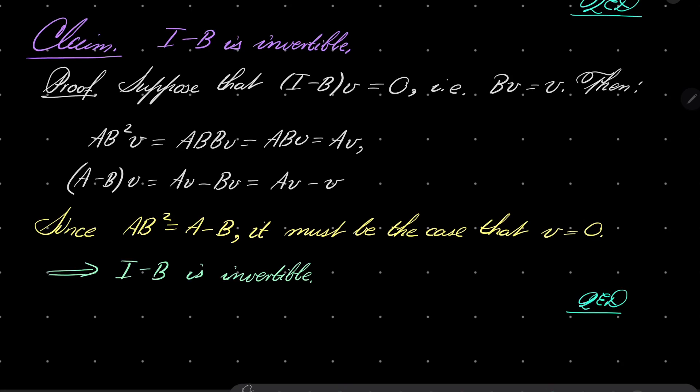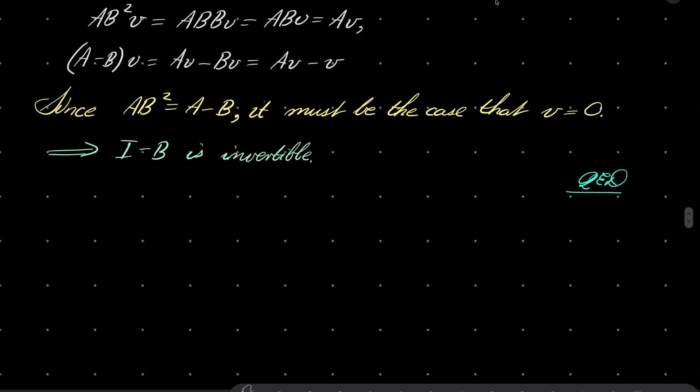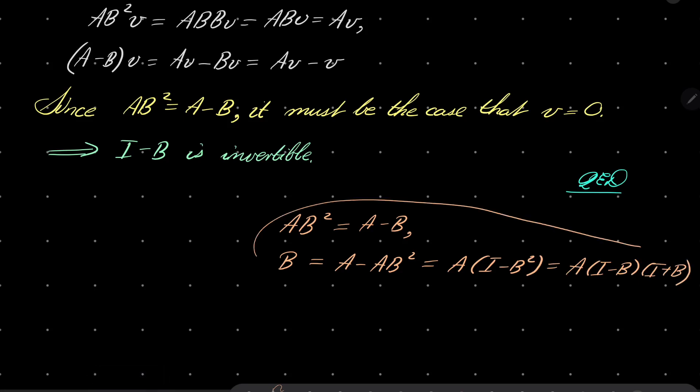Now let's tackle part B. We wish to show that A and B commute with each other. What I will do is take my assumption once again: AB squared equals A minus B. And I wish to compute, to express A in terms of B. Well, notice that B equals A minus AB squared. So it's A times identity minus B squared. But identity minus B squared is I minus B, I plus B.